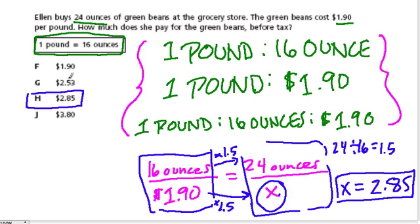Look at these choices for a moment. F doesn't work because $1.90 was the cost of 16 ounces, and she's buying more than that, so it should be more expensive. Right there you can eliminate one choice.